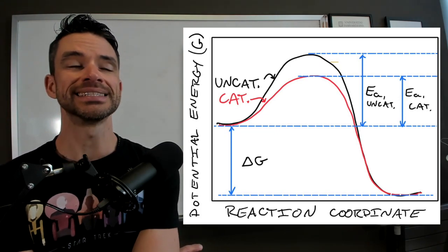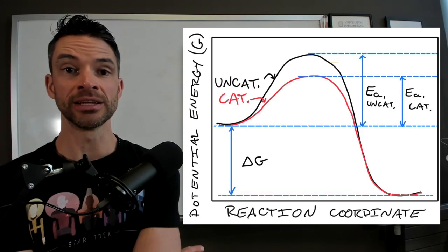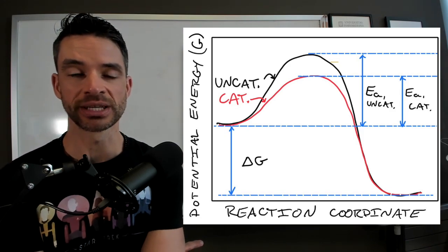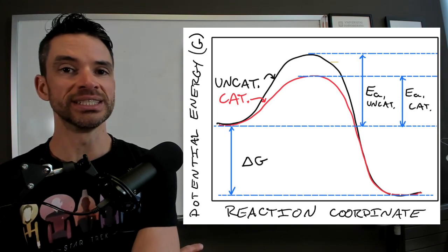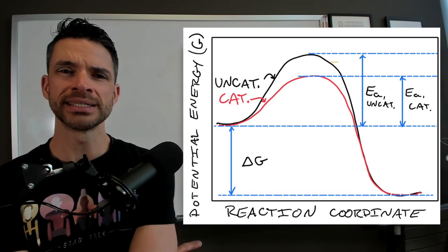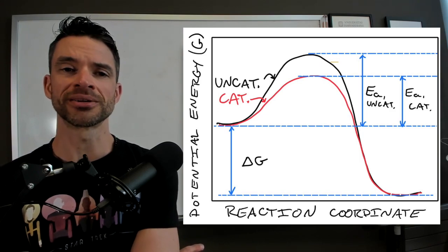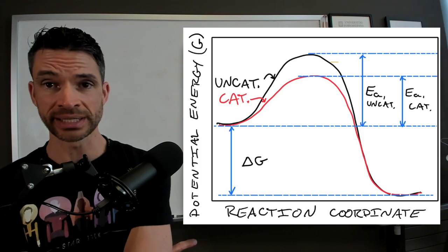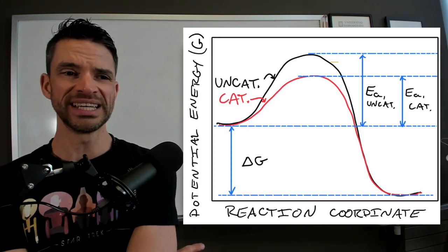It is often the case that the products have a lower potential energy, say Gibbs potential energy, than the reactants, but the reaction doesn't proceed because the activation barrier, that is the way of getting from the reactants to the products, is too insurmountable.